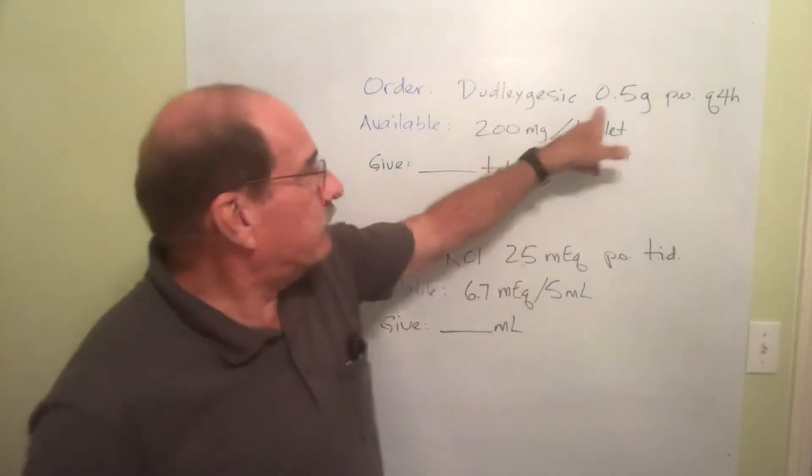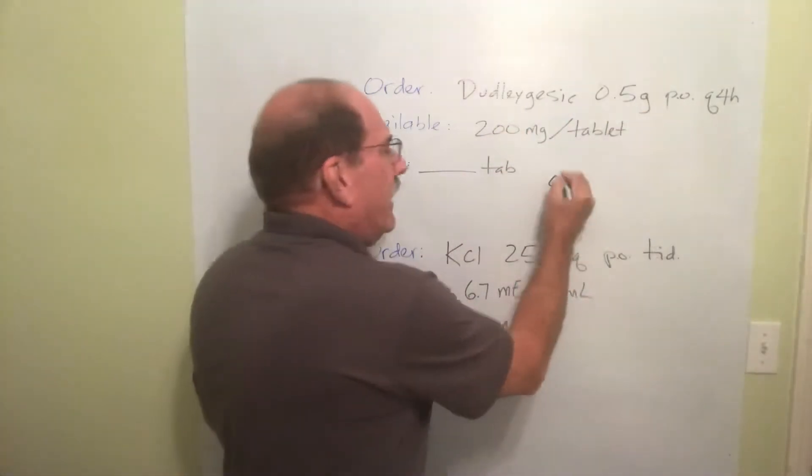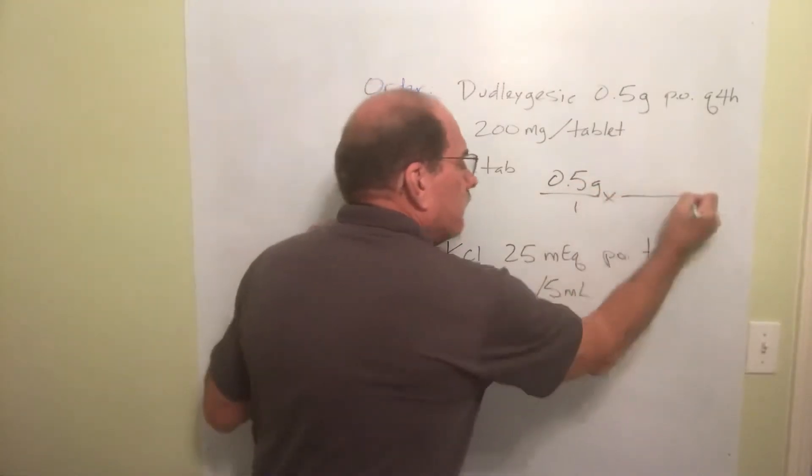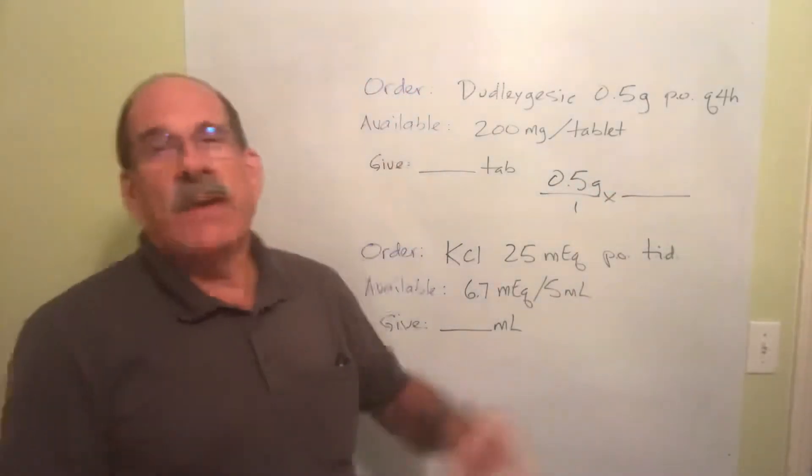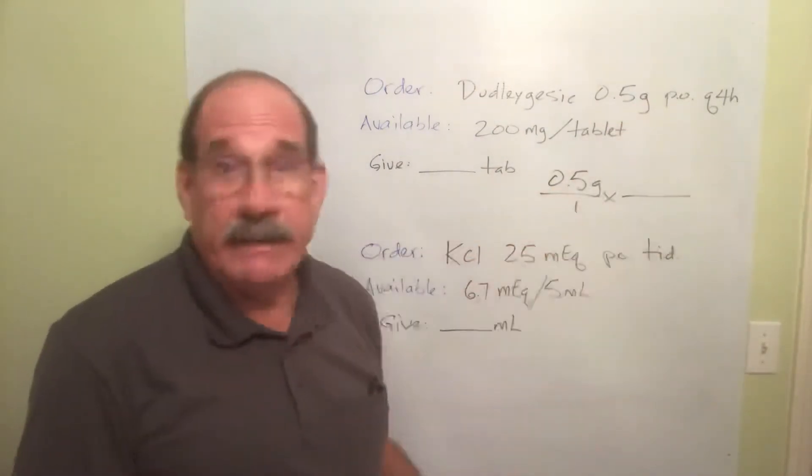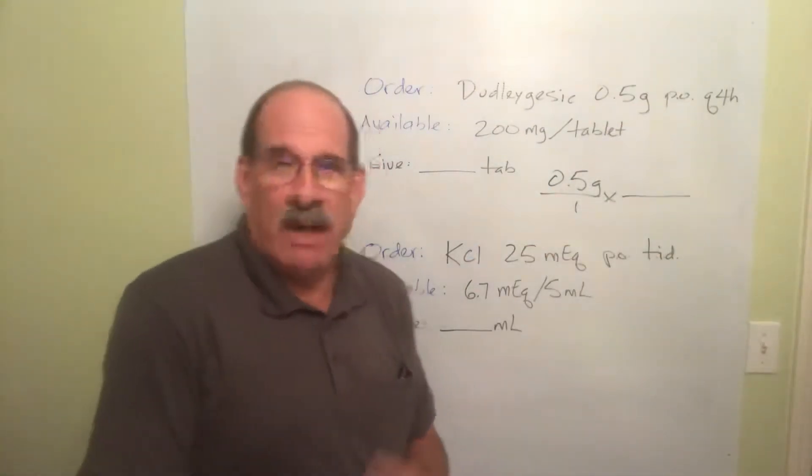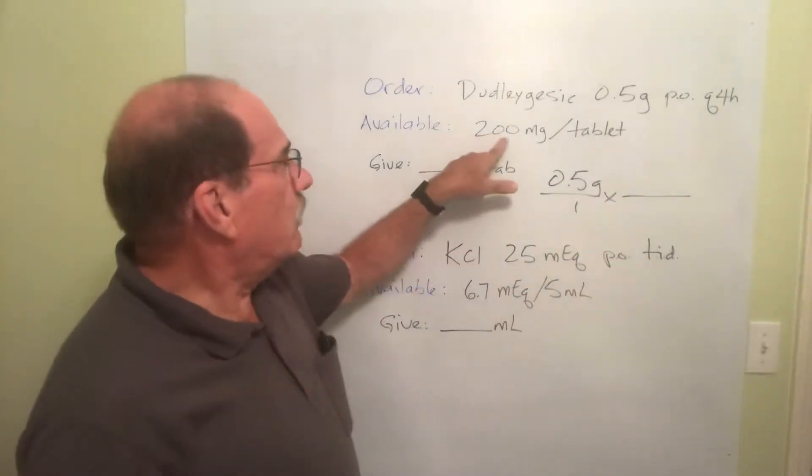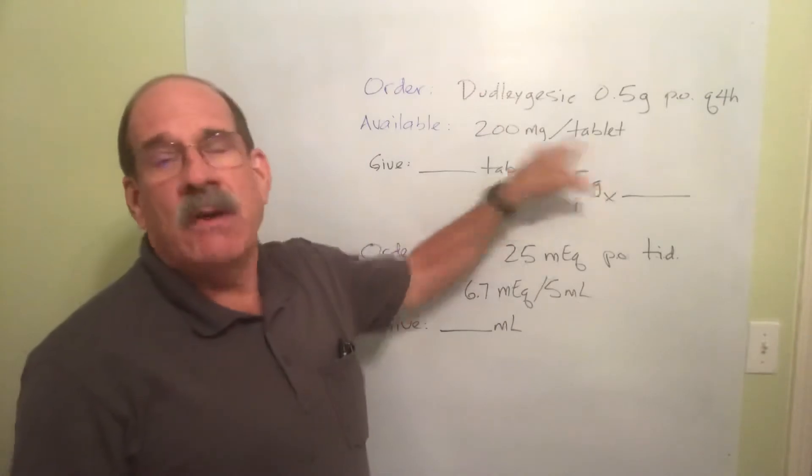So we're supposed to get 0.5 grams. Just write it down. 0.5 grams. And of course the rest doesn't matter for doing the math, but you should know what these mean. P.O. by now you should better know that means orally. Gonna do it every four hours. But here I have some 200 milligrams in each tablet. 200 milligram tablet.